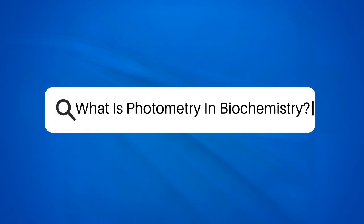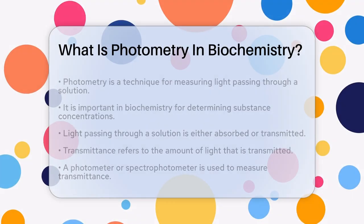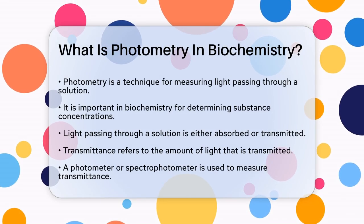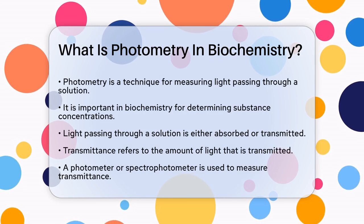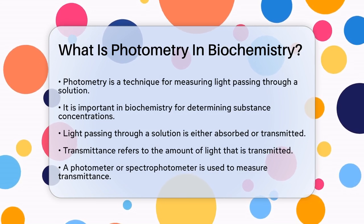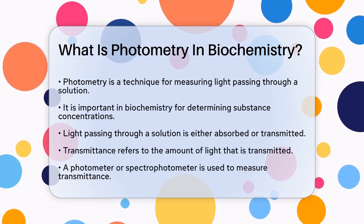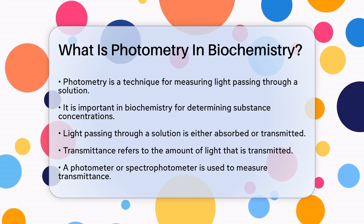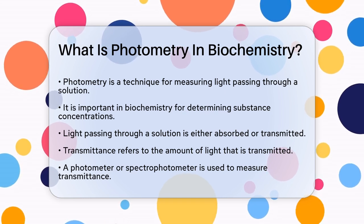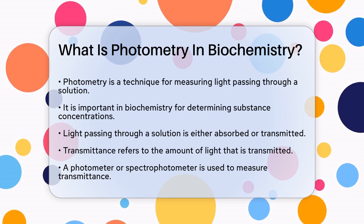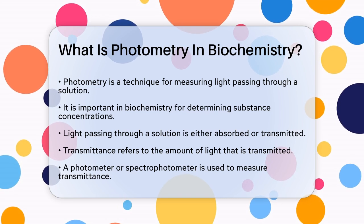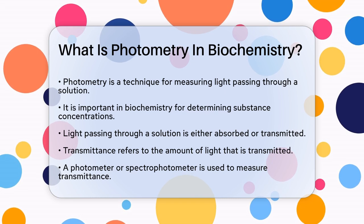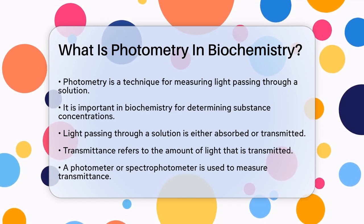What is photometry in biochemistry? If you're curious about how scientists measure the properties of substances in solutions, you're about to learn something fascinating. Photometry is a method used to measure the amount of light that passes through a solution. This technique is crucial in biochemistry because it helps scientists determine the concentration of substances in a solution.